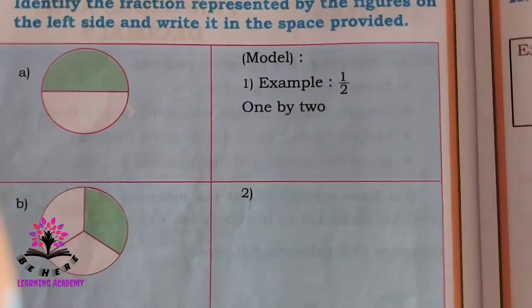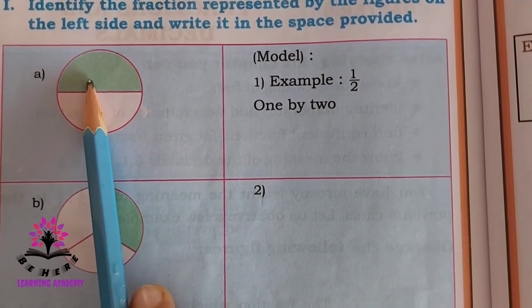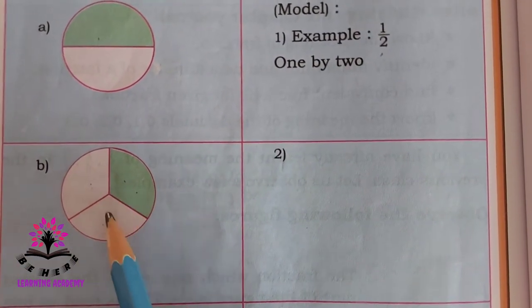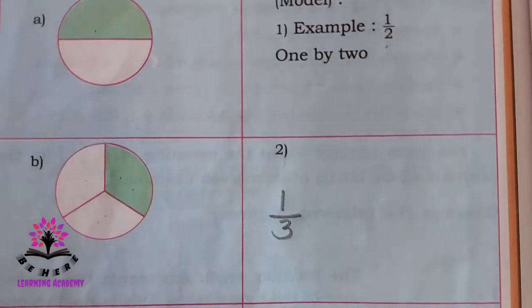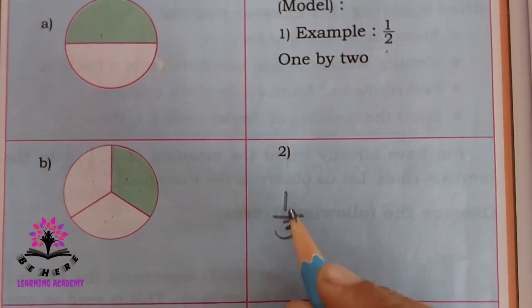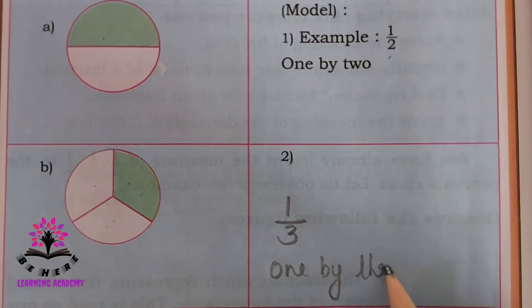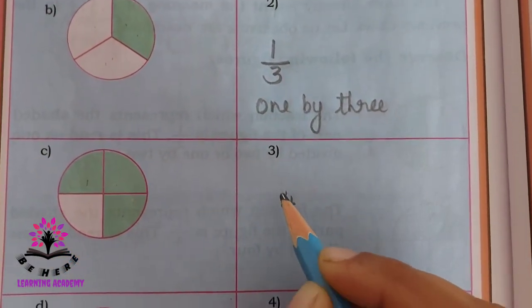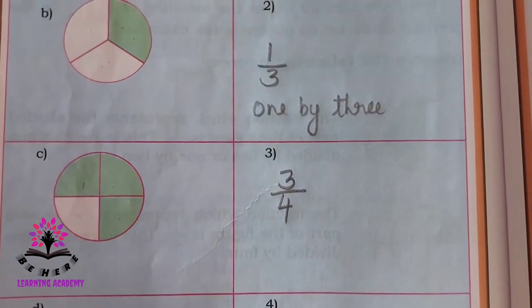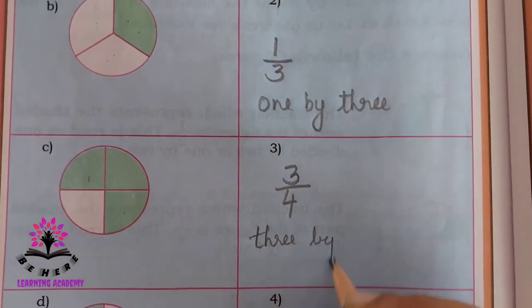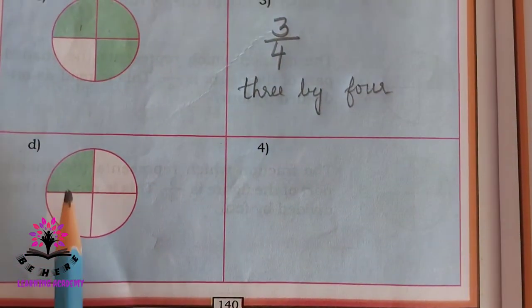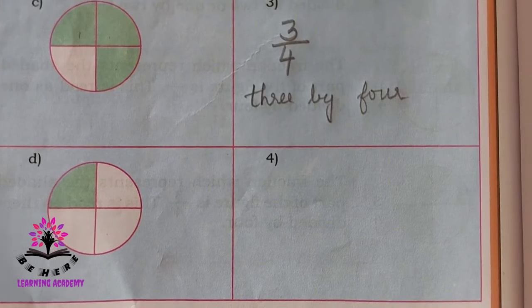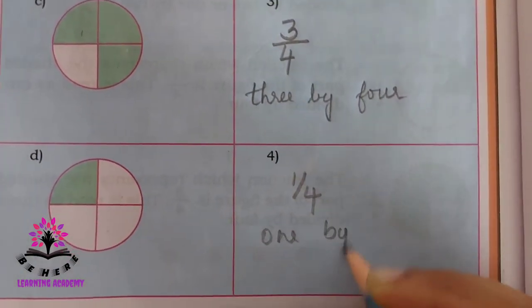The first one: there are two parts and one part is colored, so write it as one by two. The second one: there are three parts and one part is colored, so write it as one by three. Next: there are four parts and three are colored, so it is three by four. The last one: there are four parts and one part is colored, so it is one by four.